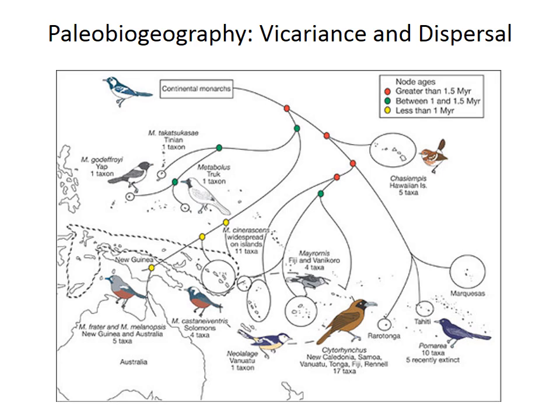Now that we've covered cladistics, biostratigraphy and correlation, and biogeography, you can integrate all these lines of evidence to study the causes of observed paleobiogeographic patterns. These types of studies are like cool detective puzzles. We have to pull together evidence from plate tectonics, paleogeography, and paleontology to figure out why certain species are found where they are.